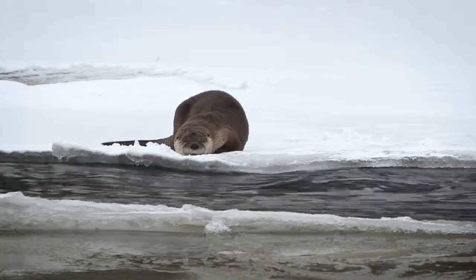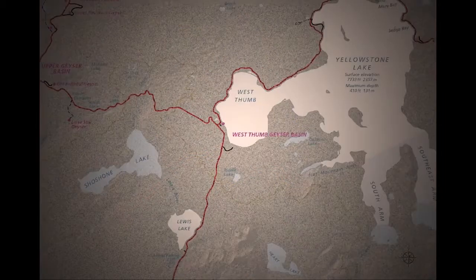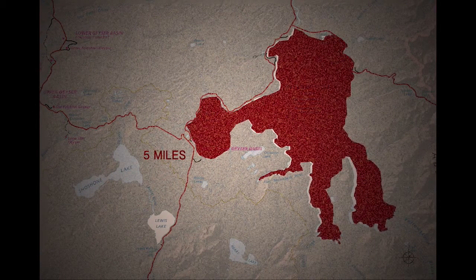The native cutthroat trout of Yellowstone National Park are being threatened by non-native introduced fishes that were brought into the park intentionally in the late 1800s and early 1900s. Lake trout were introduced to what were fishless Lewis and Shoshone lakes in the upper Snake River, but somehow they made their way to Yellowstone Lake. The non-native lake trout are a highly predatory species and had a huge impact on the native cutthroat population, causing a severe decline.